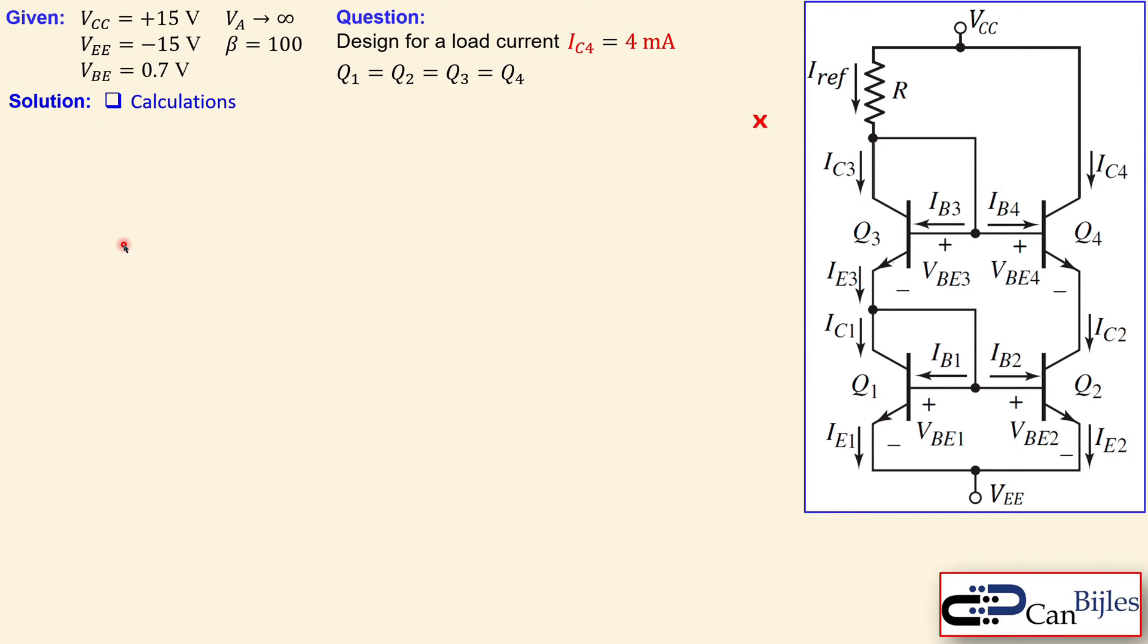Let's look at our solutions. The first step calculation: we designate node x first, and there is also a node y here. Let's set up Kirchhoff's current law (KCL) at node x. That means Iref will be IC3 plus IB3 plus IB4. We can also write that as IC3 and IB3 together, which is IE3, the emitter current of Q3. Let's designate this as equation number one.